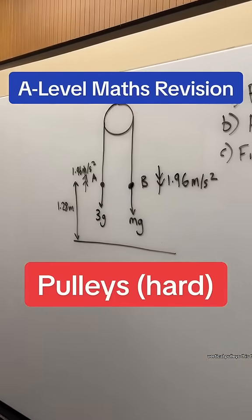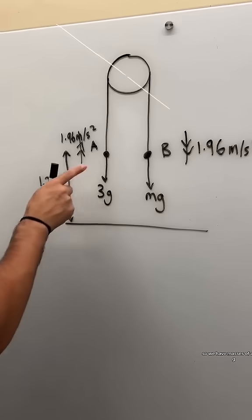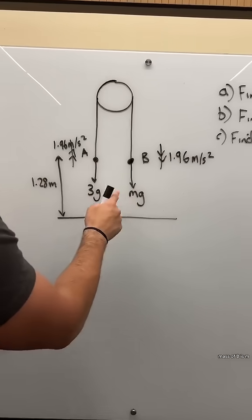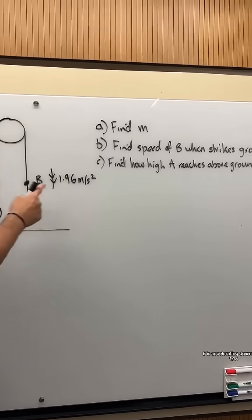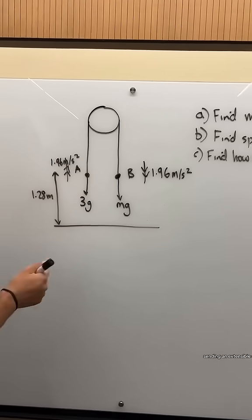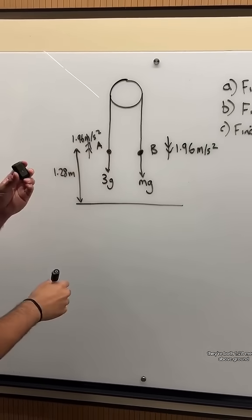Lungang, lungang, vertical pulleys this time. So we have mass of A is 3 kg, mass of B is M. B is accelerating downwards at 1.96, A is accelerating upwards. It's an inextensible string. They're both 1.28 meters above ground.